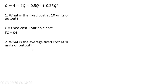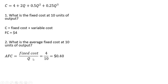Next, what is the firm's average fixed cost at 10 units of output? Average fixed cost is fixed cost divided by the quantity of output, so 4 divided by 10, or 40 cents per unit. So there is 40 cents of fixed cost on average in each unit of output.